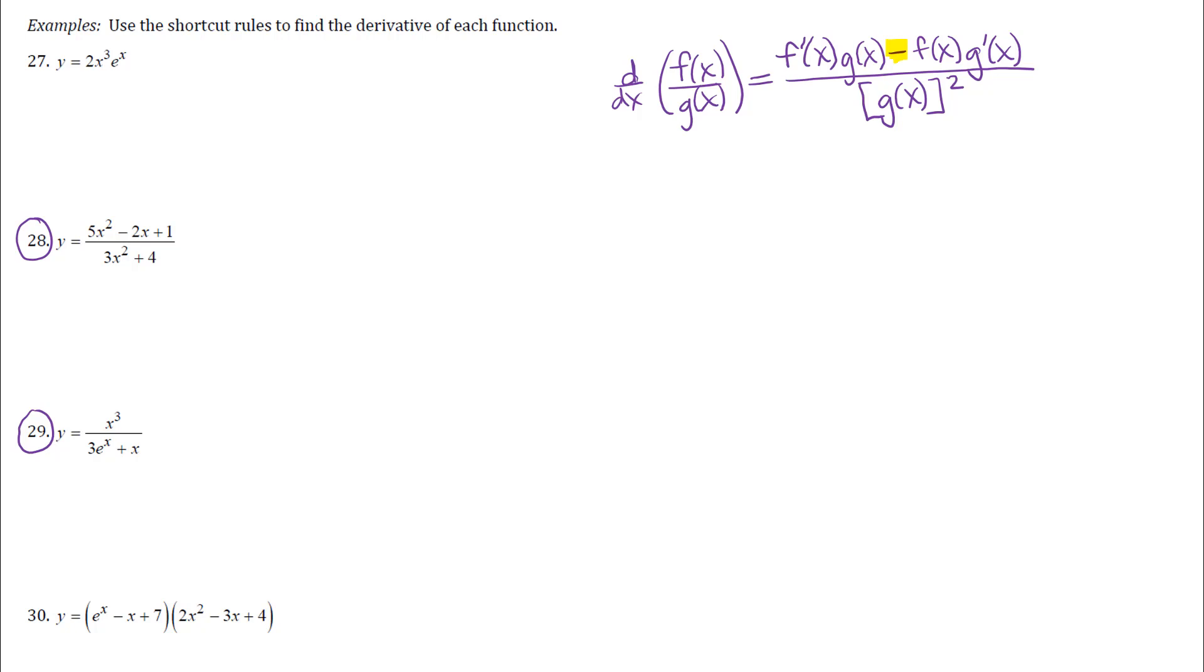You can switch around the multiplication within that term. So instead of having f prime of x first and then times g of x you can switch the order on those two and then similarly in the second term, but can't switch the order of the terms.